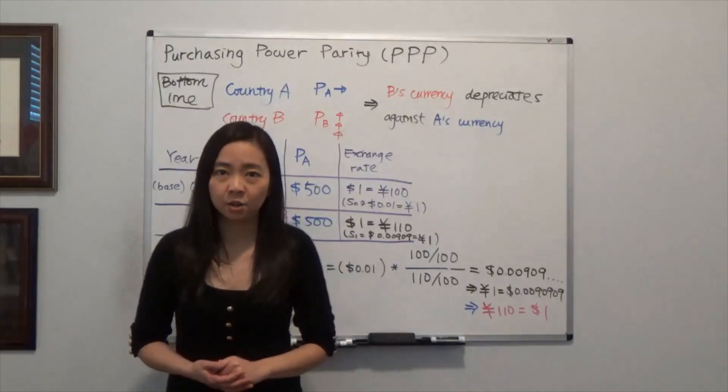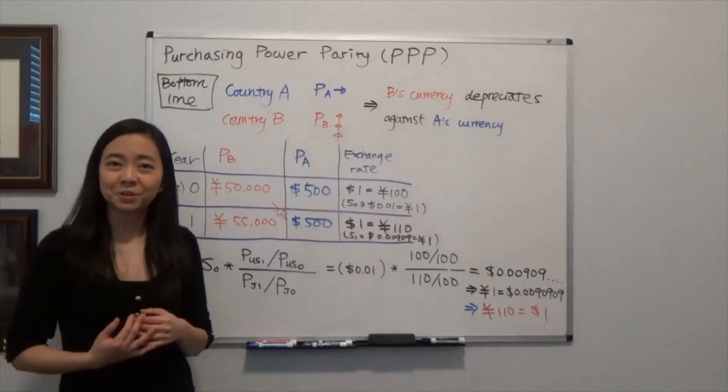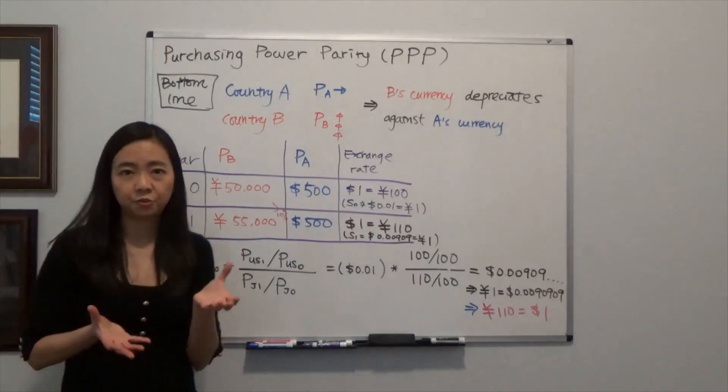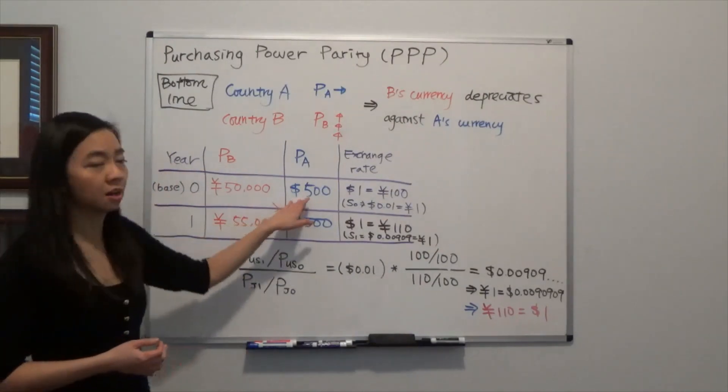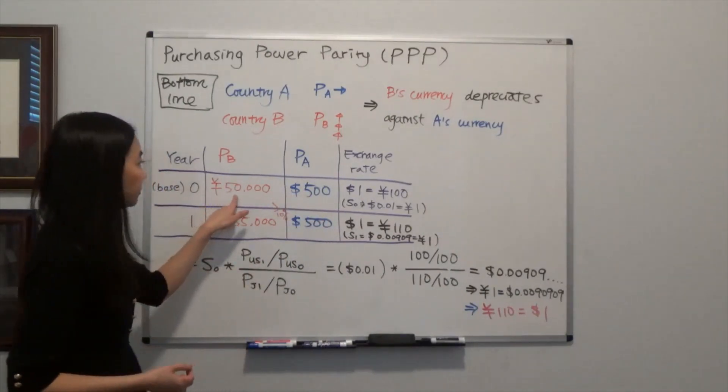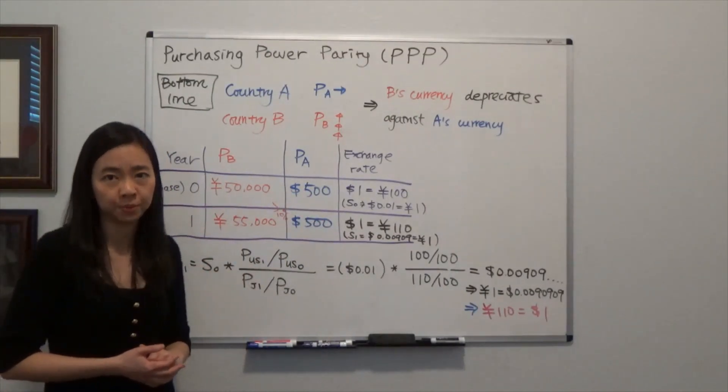Now we are going to take a look at the example. Suppose in year 0, the base year, a basket of goods is sold for $500 in the United States. And exactly the same basket is sold for 50,000 Japanese Yen in Japan.